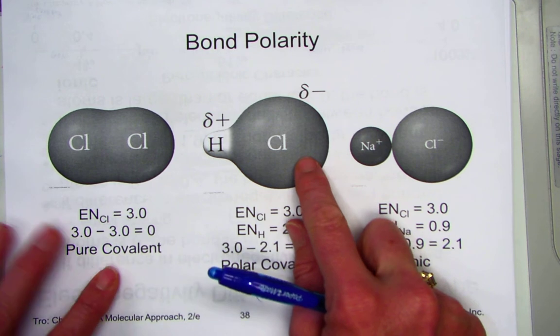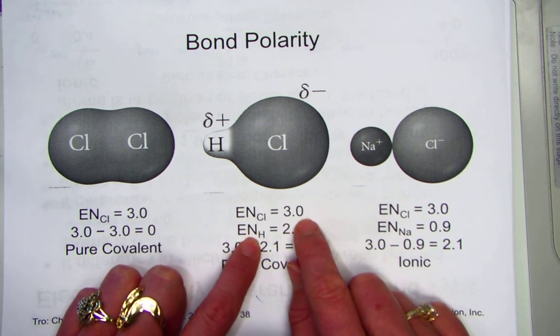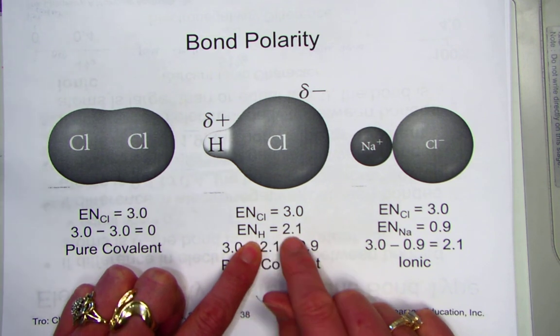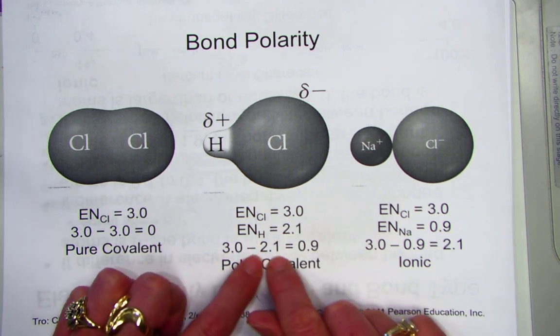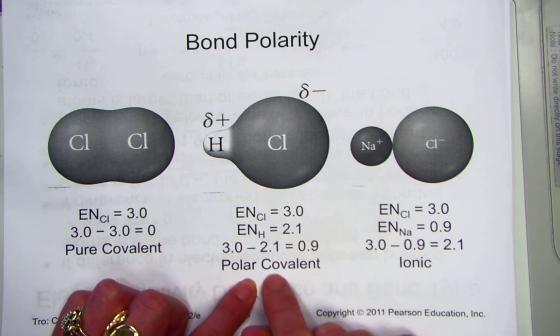In a molecule of HCl, we find the value of 3.0 for chlorine. The value for electronegativity for hydrogen is 2.1. When I subtract those two, it is 0.9, therefore classified as polar covalent.